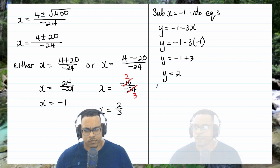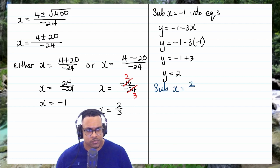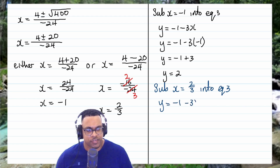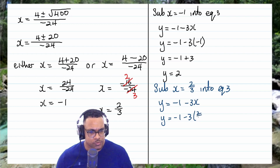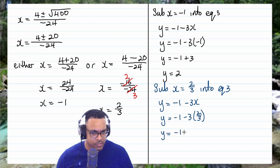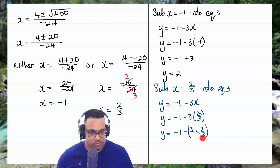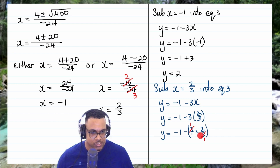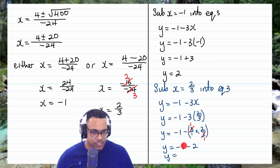Now substituting x equals 2 thirds into equation 3: y equals negative 1 minus 3 times 2 thirds. This becomes negative 3 over 1 multiplied by 2 thirds. The 3s cancel, giving 2 over 1, which is 2. So y equals negative 1 minus 2, which equals negative 3.